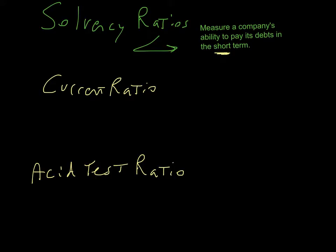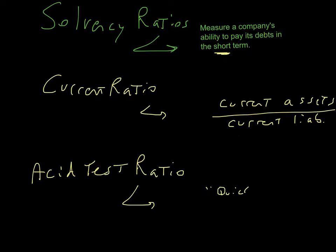The current ratio is defined as current assets divided by current liabilities. And the acid test ratio is defined as what we call quick assets divided by, once again, current liabilities. Now, we need to define some terms here. What do we mean, first of all, by the denominator here?